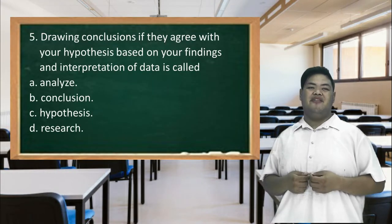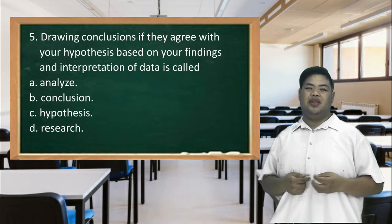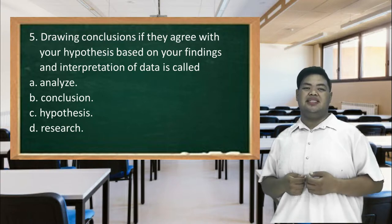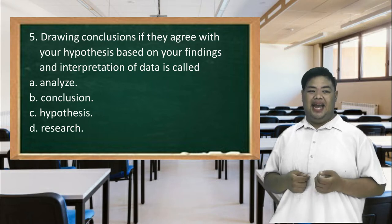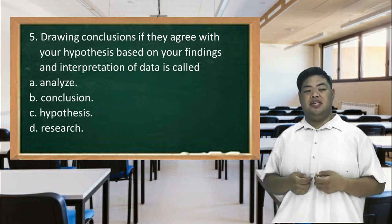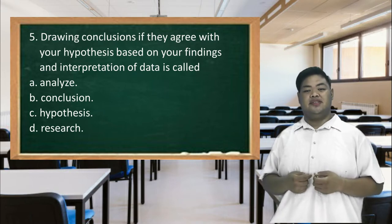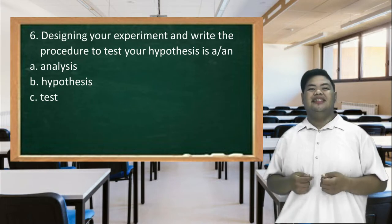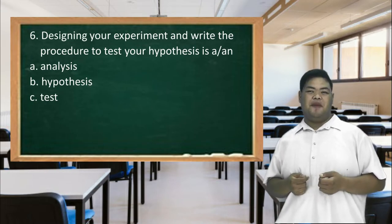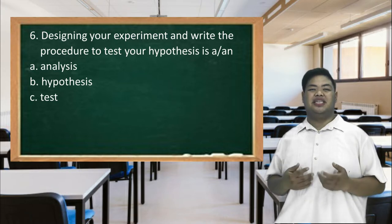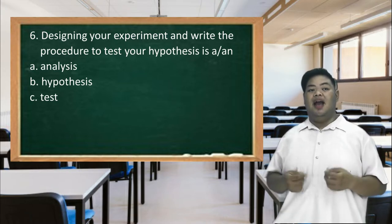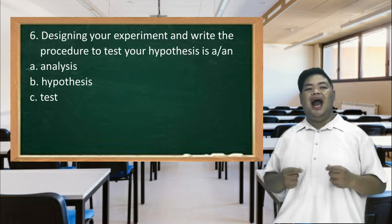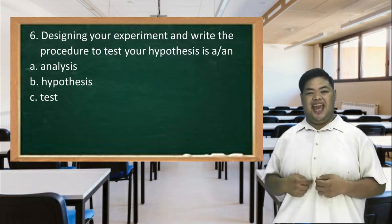Number 5. Drawing conclusions if they agree with your hypothesis based on your findings and interpretation of data is called: A. Analyze. B. Conclusion. C. Hypothesis. D. Research. Number 6. Designing your experiment and writing the procedure to test your hypothesis is: A. Analyze. B. Hypothesis. C. Test.